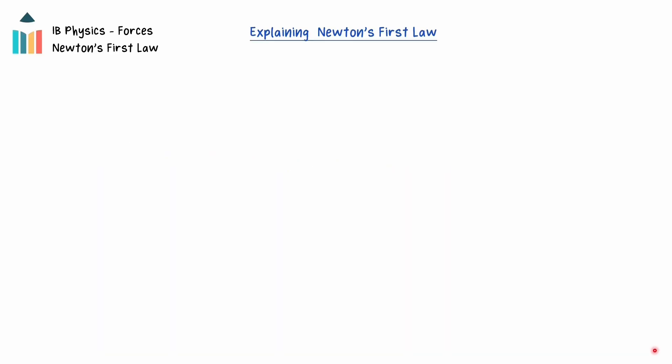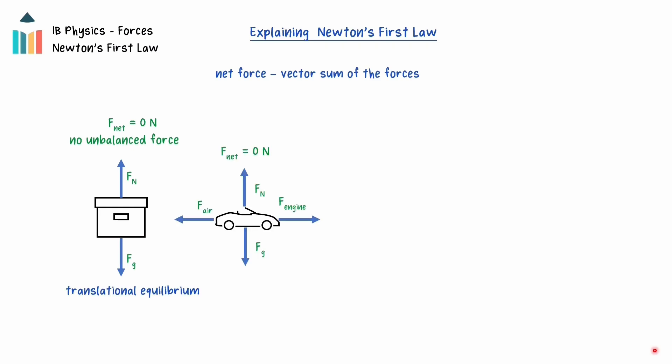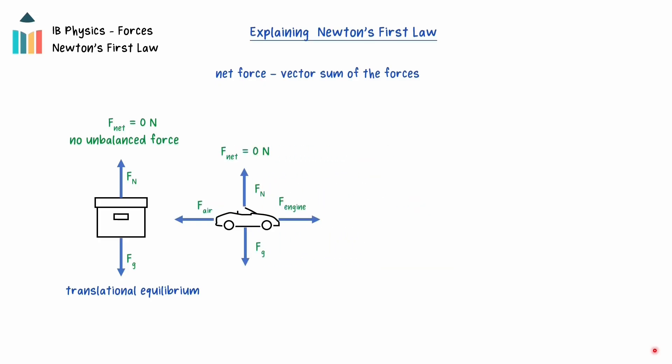A key aspect of Newton's first law is the idea of total, or net force. The net force, or as it is also known, the resultant force, is the vector sum of all the forces acting on an object. If these forces add to zero, then the forces are said to be balanced, and the object is in translational equilibrium. A zero net force does not mean there are no forces acting on the object. For example, a car moving at a constant speed will have a net force of zero Newtons, but there are many forces acting on it that are balanced.